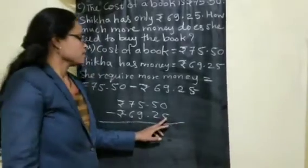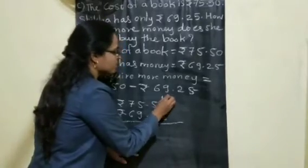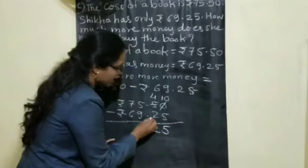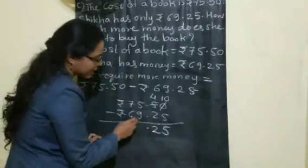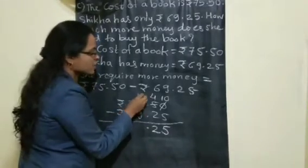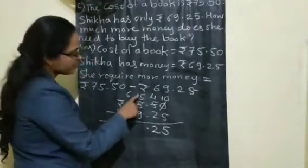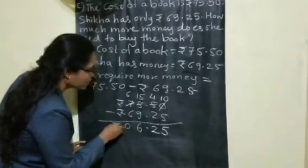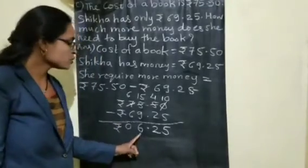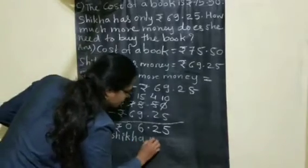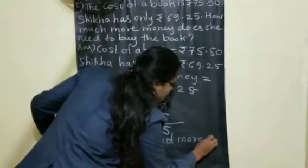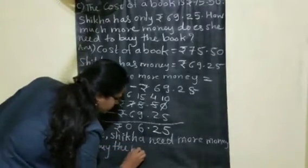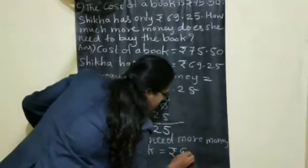Can you subtract 5 from 0? No — borrow from the neighbor. It will become 10, and how much left? 4. 10 minus 5 is 5. 4 minus 2 is 2. Write the dot as it is to separate rupees and paise. Can you subtract 9 from 5? No — borrow again. It will become 15, and how much left? 6. 15 minus 9 is 6. And 6 minus 6 is 0. Write the rupee symbol. So how much extra money does she need to buy the book? Rupees 6.25. Hence, more money to buy the book is equal to rupees 6.25.